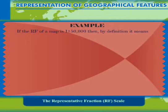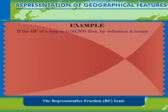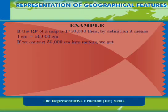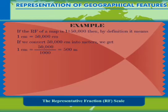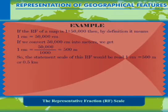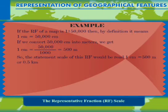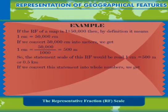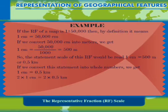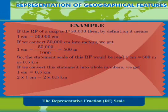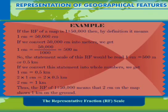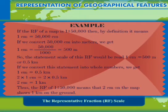For example, if the RF of a map is 1:50,000, by definition it means 1 cm is equal to 50,000 cm. Converting 50,000 cm into meters gives 1 cm equal to 50,000 ÷ 1,000 = 500 meters. So the statement scale would read 1 cm is equal to 500 meters or 0.5 km. Converting to whole numbers: 2 cm is equal to 1 km. Thus, the RF of 1:50,000 means that 2 cm on the map shows 1 km on the ground.